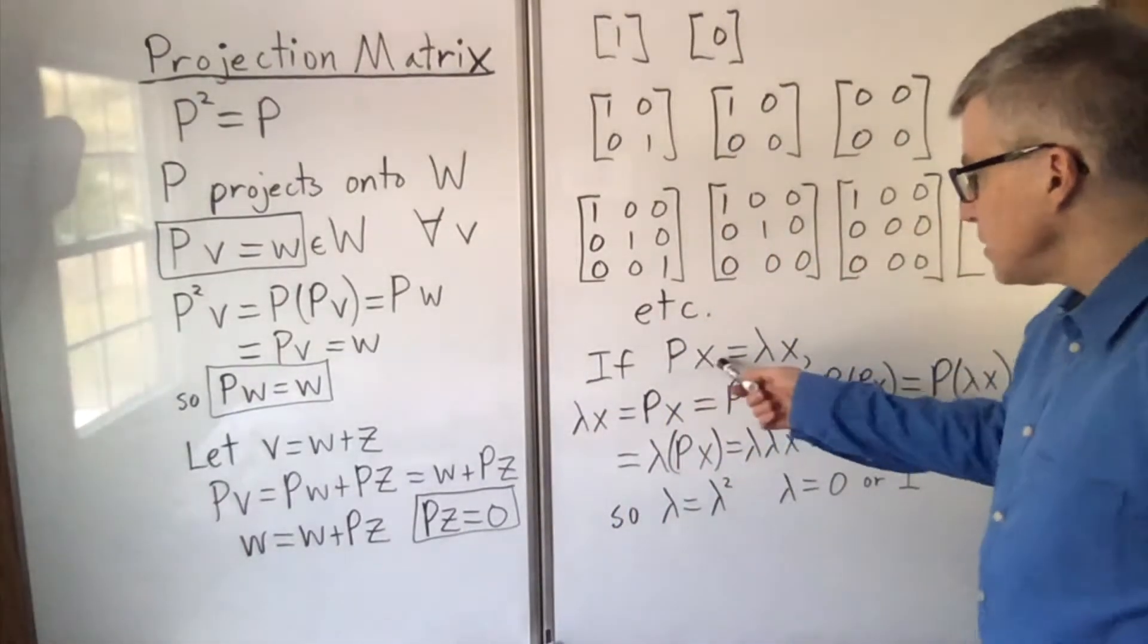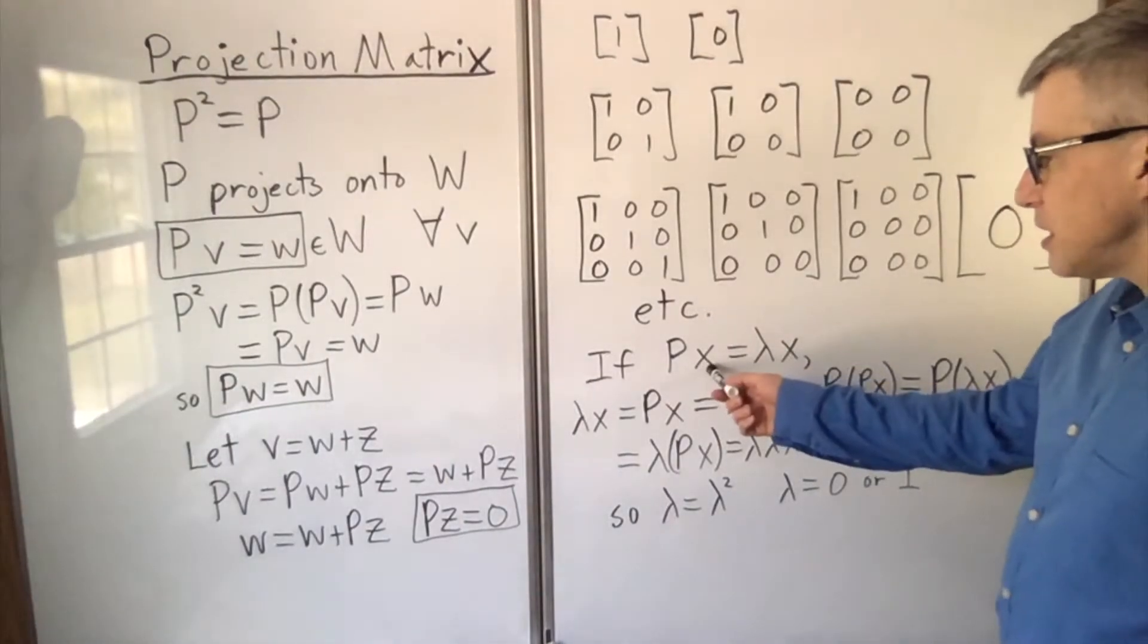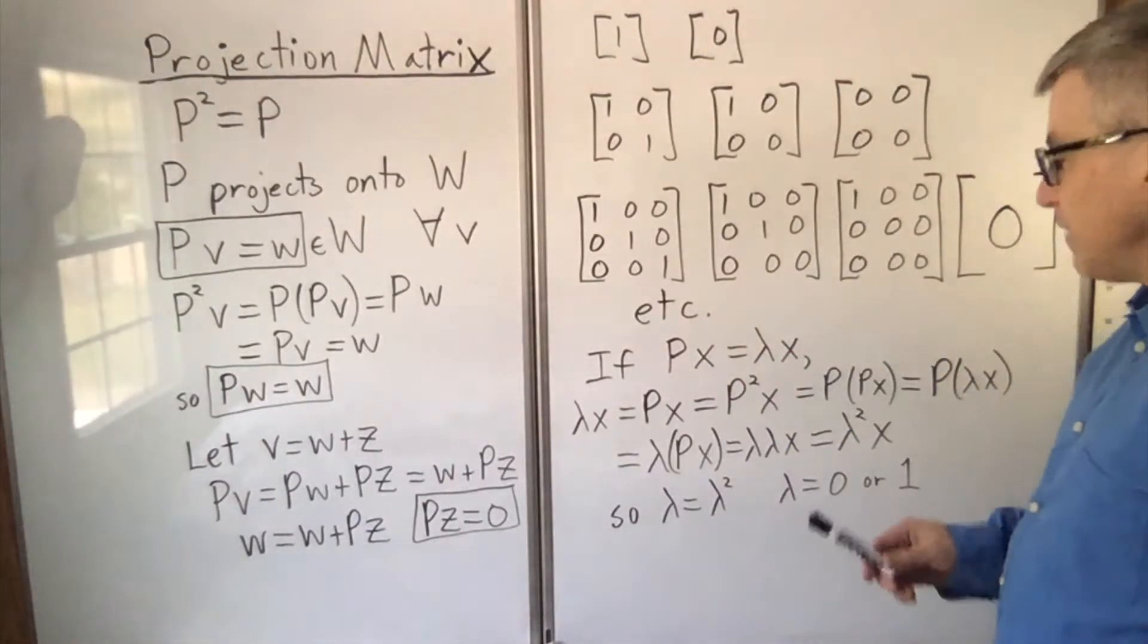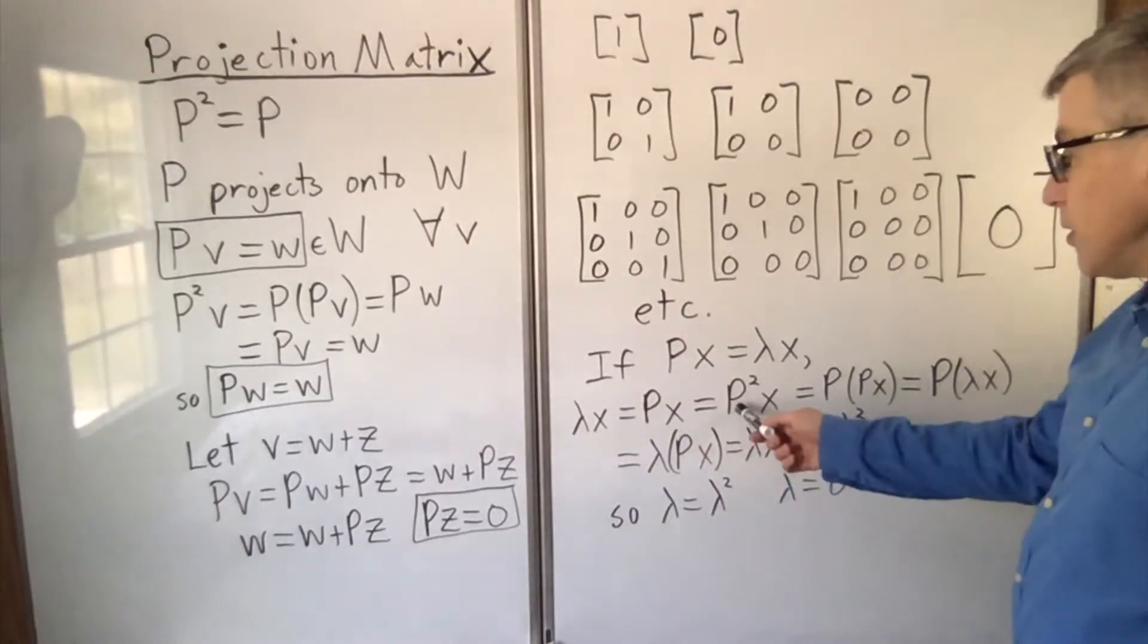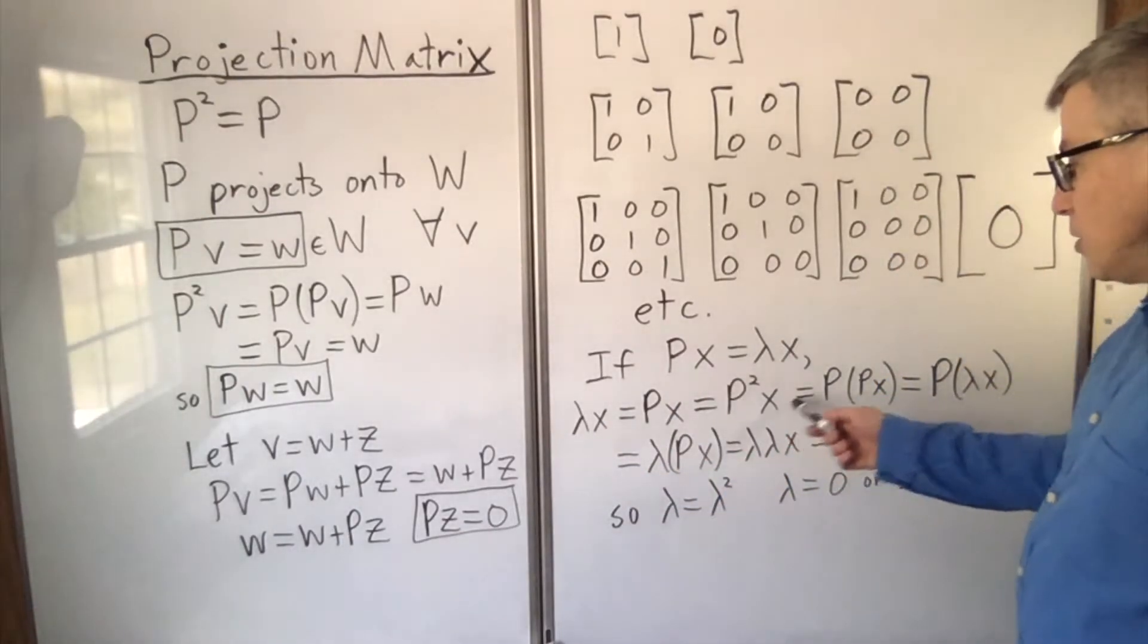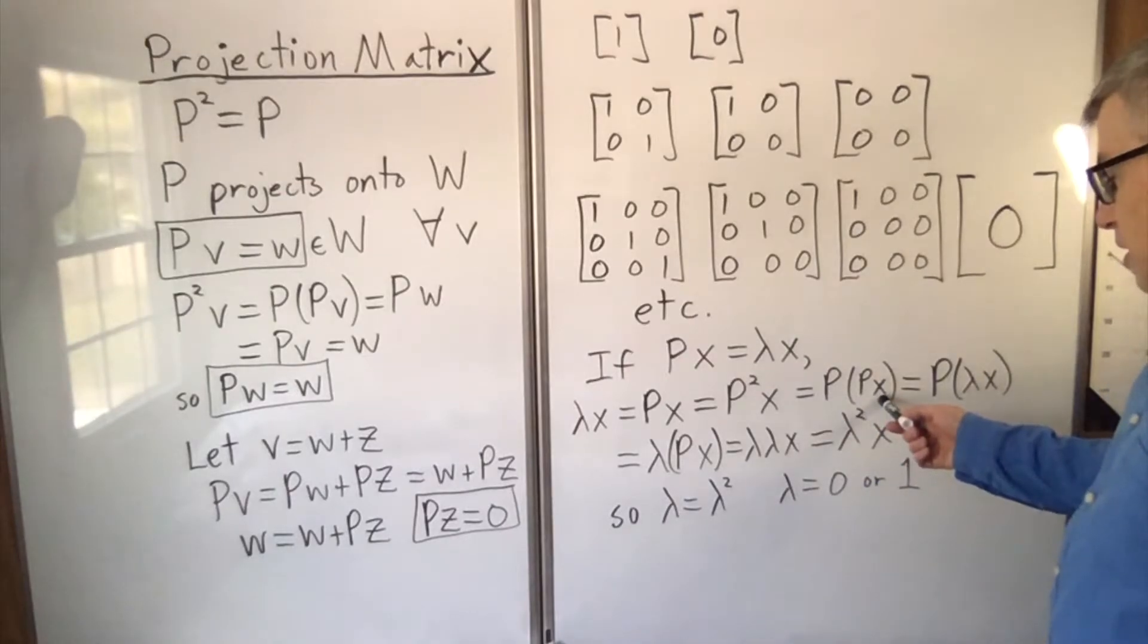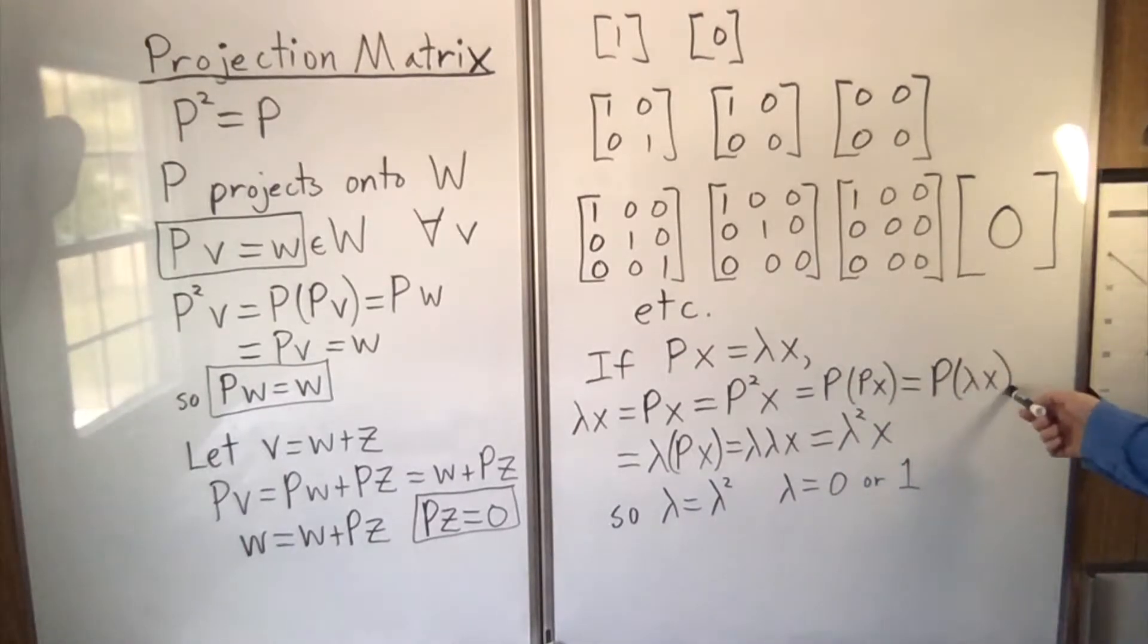Well, if px equals lambda x, so that x is an eigenvector and lambda is its eigenvalue, then lambda x is px, but p is p squared, so that's p squared x, which is p times px. But px is lambda x, so that's p lambda x. You can pull the lambda out, so that's lambda px.